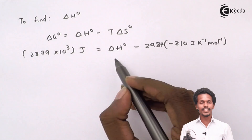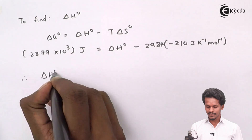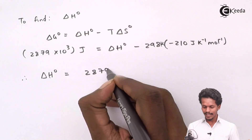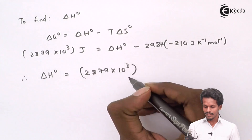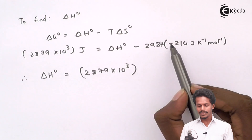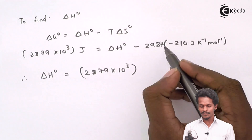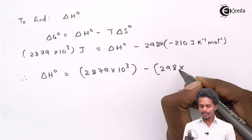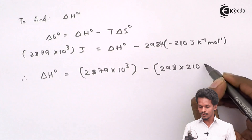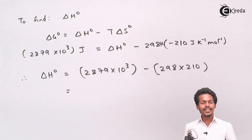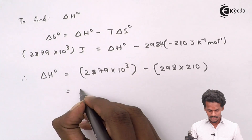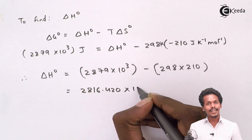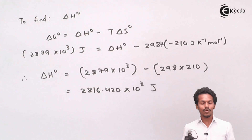We can now calculate delta H⁰. Delta H⁰ = 2879 × 10³ J/mol + (298 × 210) J/mol. The minus times minus gives a positive contribution, so delta H⁰ = 2879 × 10³ + 62,580 ≈ 2,816,420 J, which we write as approximately 2816.42 × 10³ Joules.